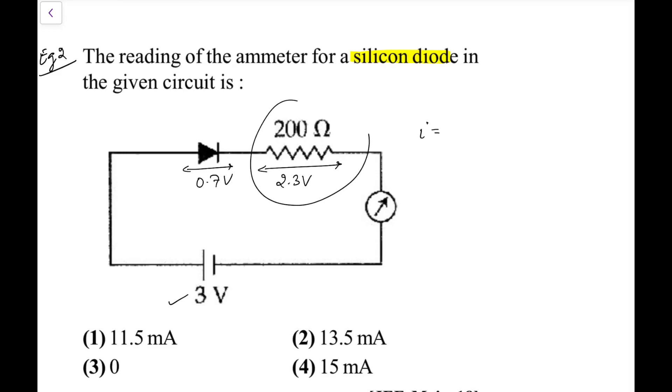So the current using ohm's law on resistor, it would be 2.3 upon 200, that is you can write into 1000 you will have in milliampere. So what you have, this is 5, 23 into 5, that will come out as 11.5 milliampere. Go for option 1 in this particular case, taking it as 0.7.